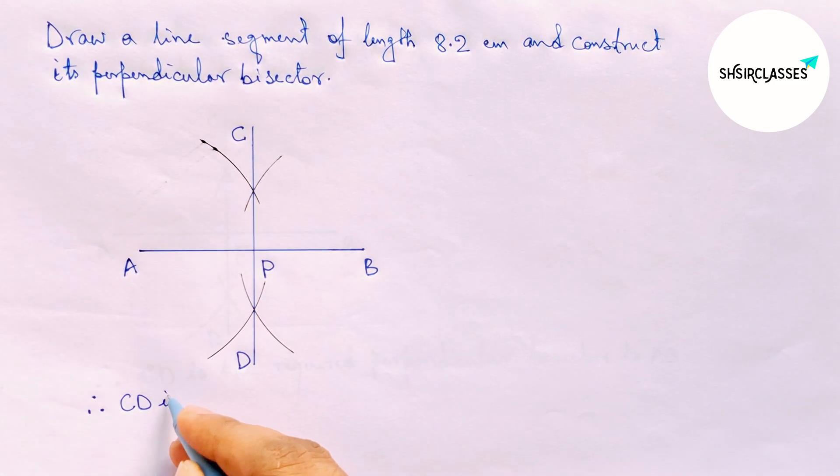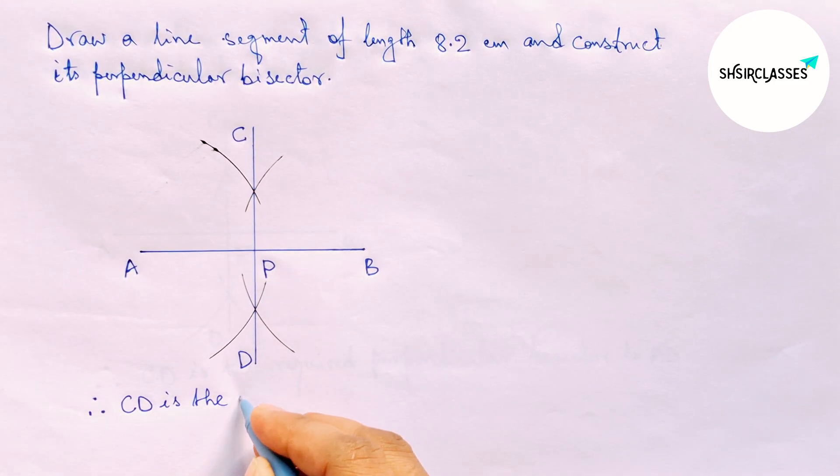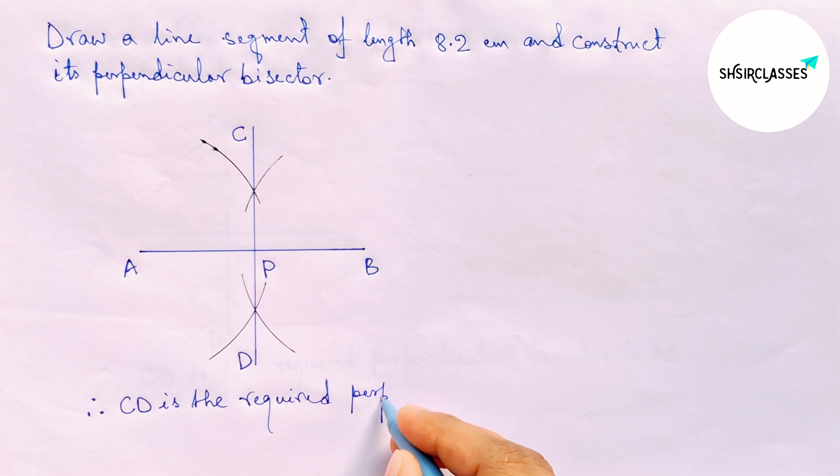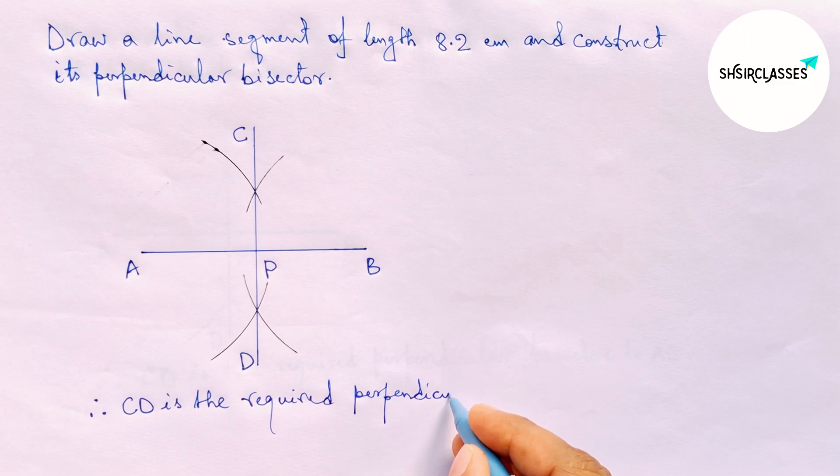required perpendicular bisector to the line AB of 8.2 centimeters. By this way, you can construct a perpendicular bisector